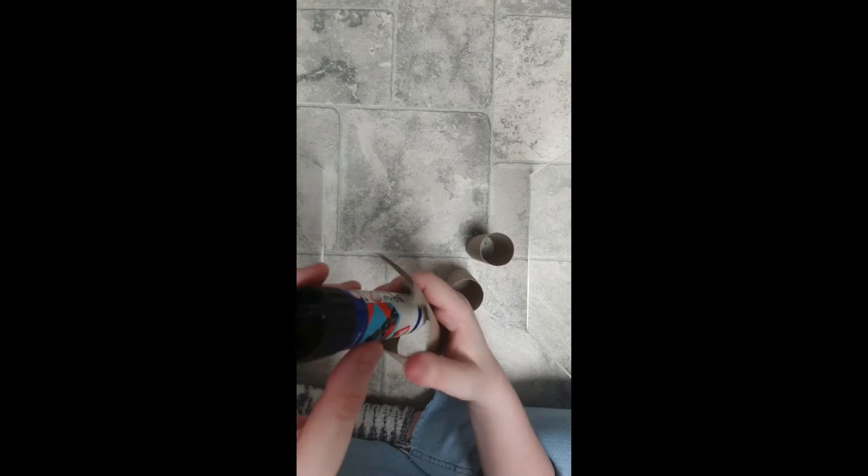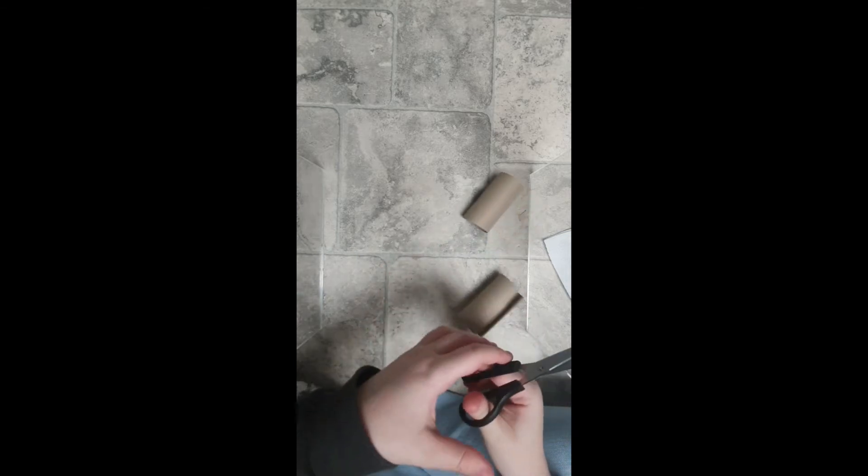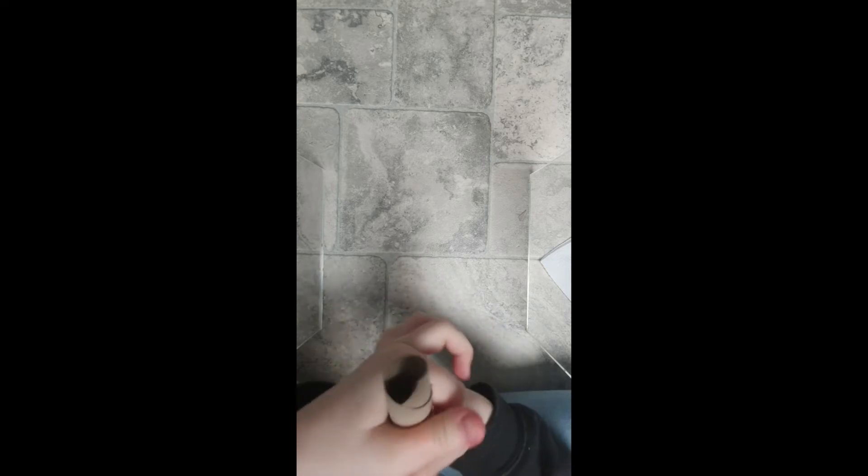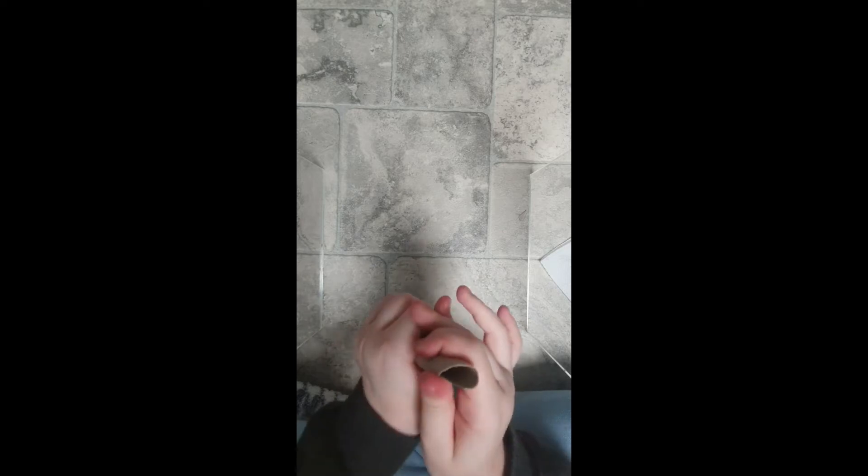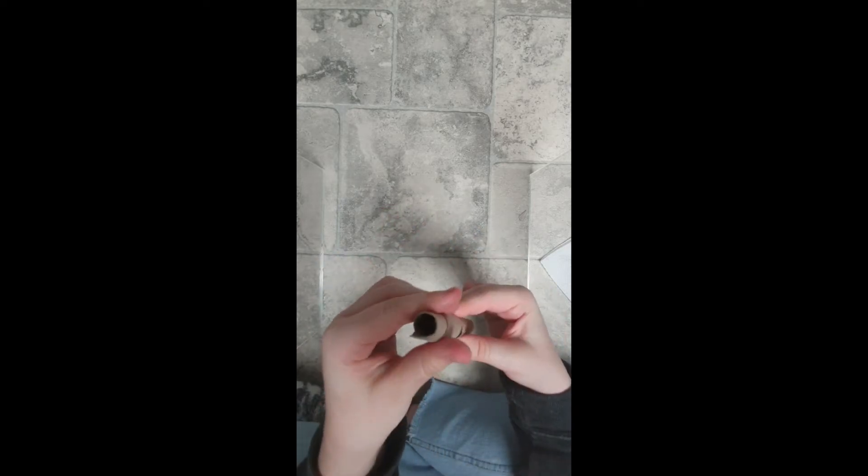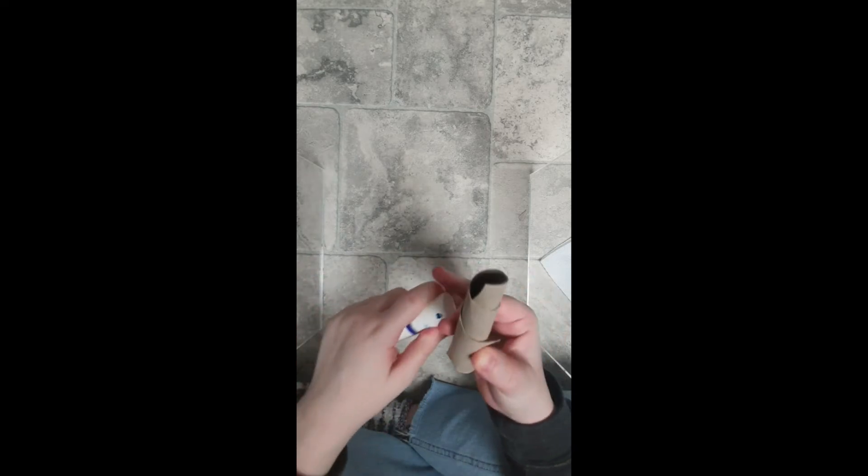So while that dries, we're gonna grab another tube and cut it in half like that. Once we've done that, we're gonna twist it into a point like so. Then you're gonna get your glue stick and glue all this.